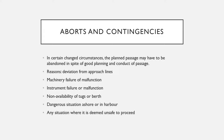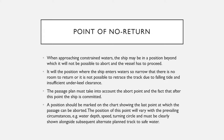In certain changed circumstances during the planned passage, you may have to abandon the intended track in spite of good planning and conduct of passage. The reasons for this could be deviation from approach lines, machinery failure or malfunction, instrument failure, non-availability of tugs or berth, a dangerous situation developed ashore or in harbor, or any situation where you feel it is unsafe to proceed.